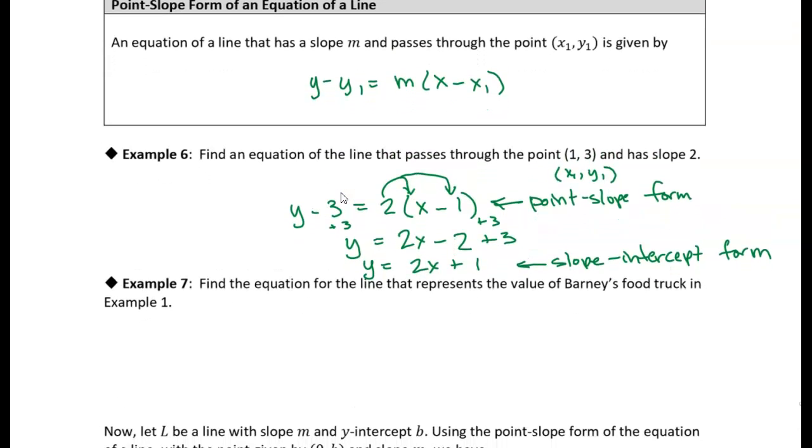And we're going to use the point-slope form of a line, so I'll keep that up there as well. But in this case, it's value. The Y-coordinate is the value of the truck, so we could just use V instead of Y. So let's write down what we know.